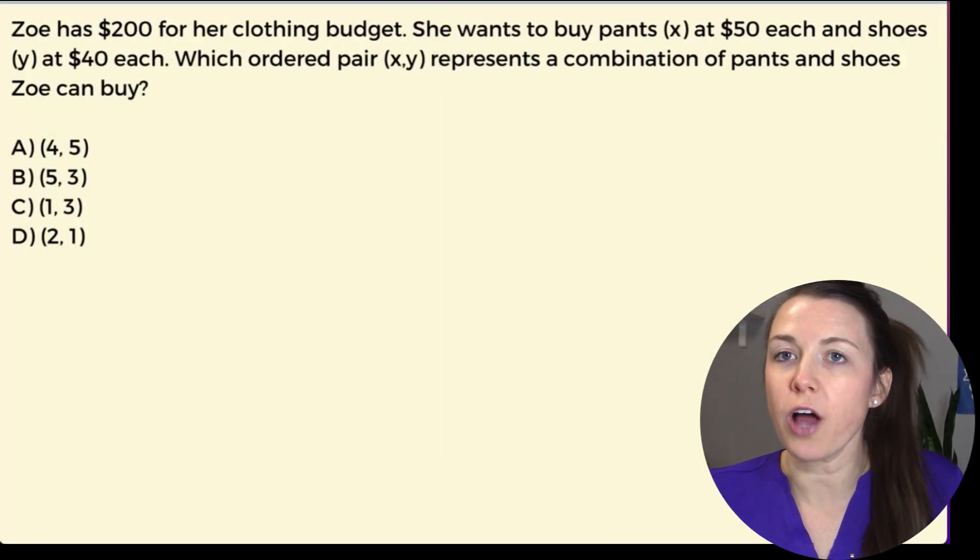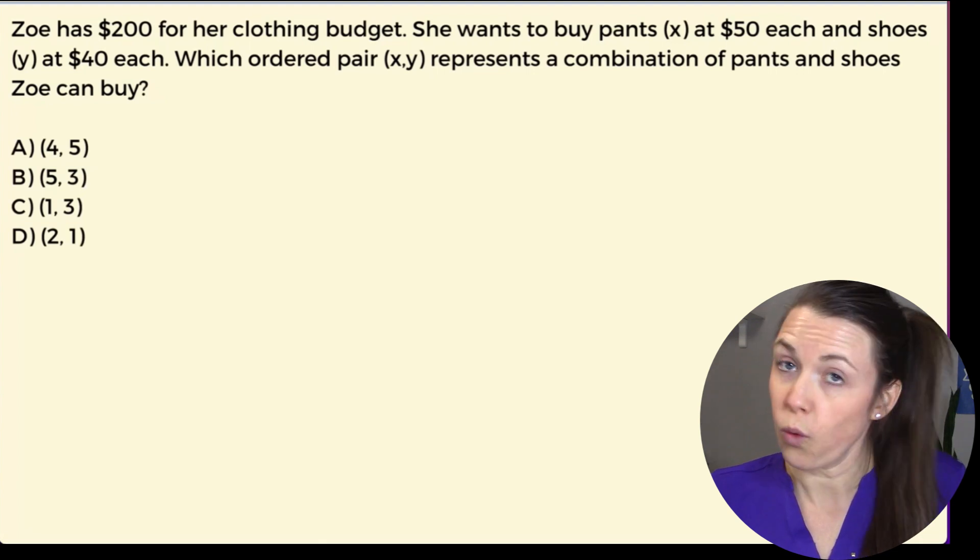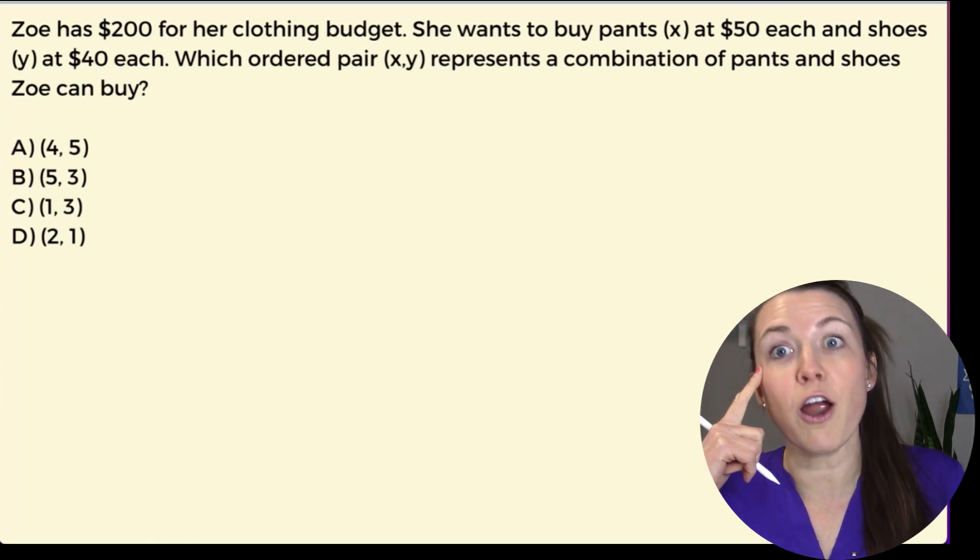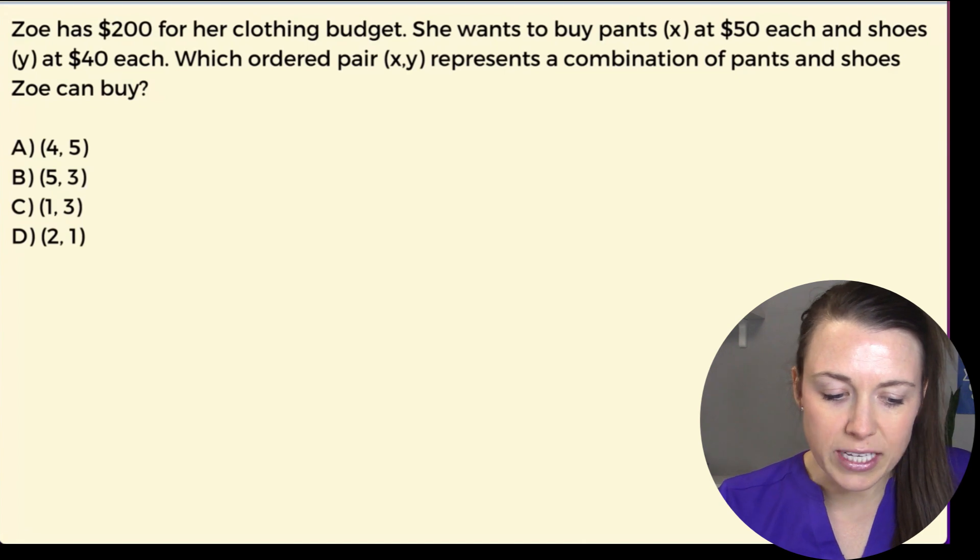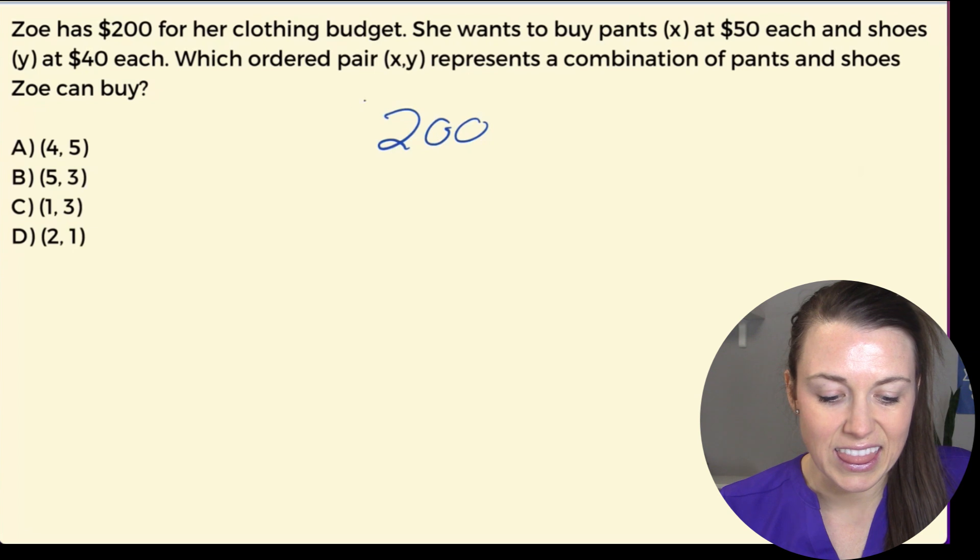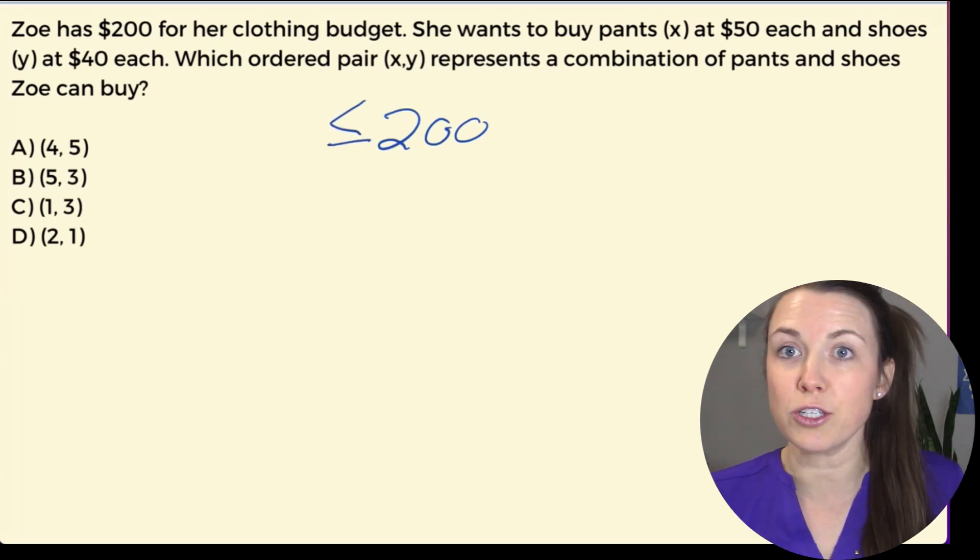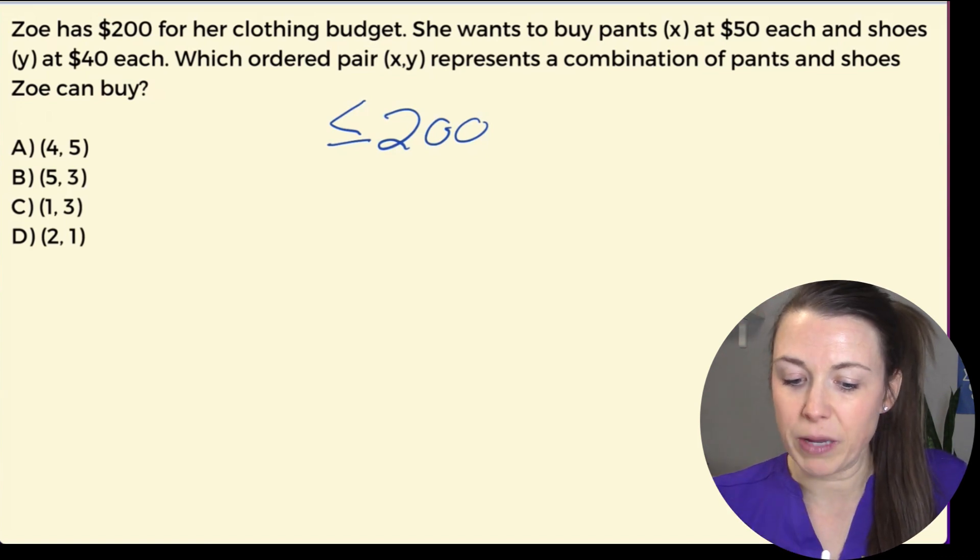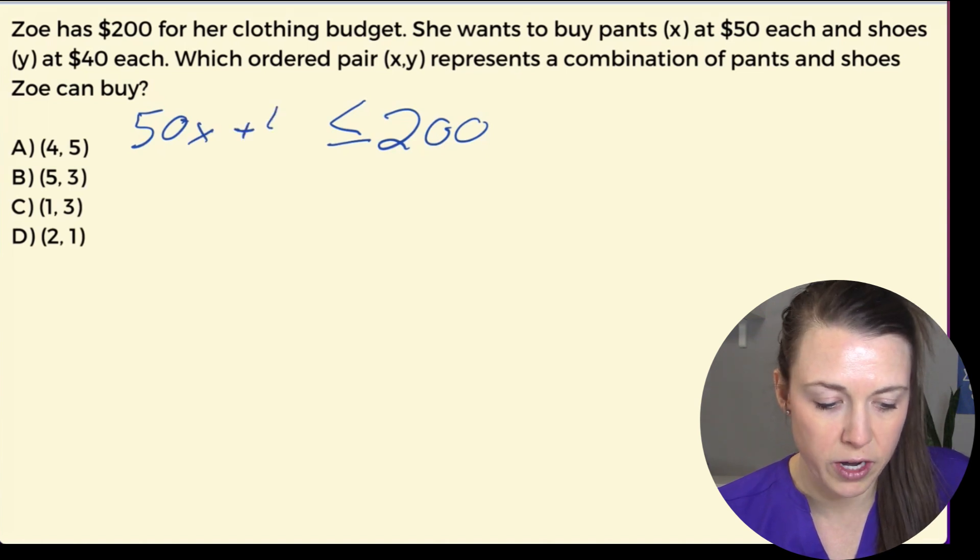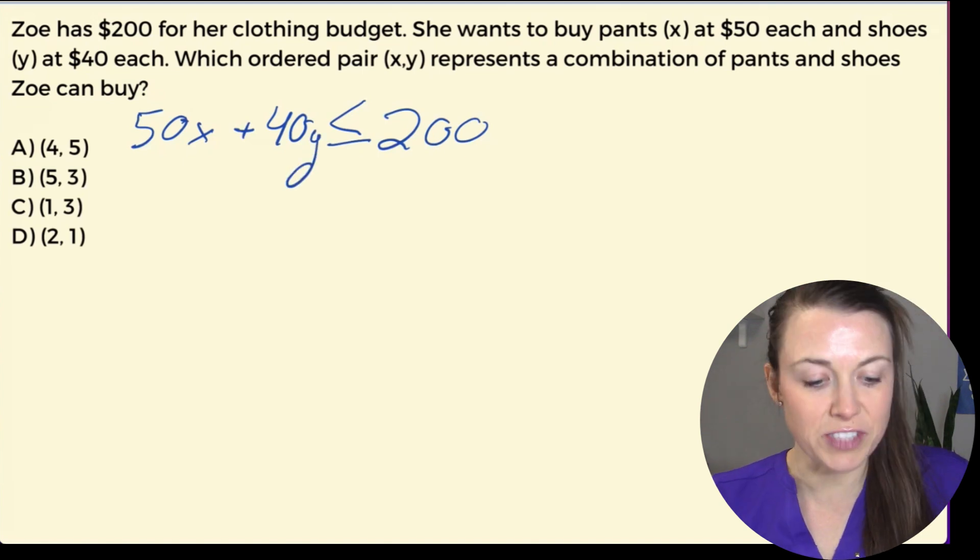Next question here. Zoe has $200 for her clothing budget. She wants to buy pants (x) at $50 each and shoes (y) at $40 each. Each ordered pair (x, y) represents a combination of pants and shoes Zoe can buy. So where's the equation? There is no equation. That means we have to write our own equation, which is fine. We've got this. She has $200. So here's the equation, $200. I know that she has to buy less than or equal to $200. She could go right up to the $200 but she can't go over. So now we have pants, which are $50, so I'm going to say 50x plus her shoes, which are 40, 40y. So 50x + 40y is less than or equal to 200. That's our equation.